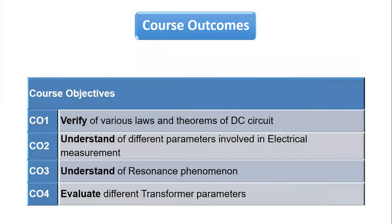So to start with, the outcomes of this particular lab are — there are four outcomes as listed here. The first outcome is that after going through this lab, you will be able to practically verify all the laws like KVL and KCL, and all the theorems that you would study in your theory — for example, superposition theorem, maximum power transfer theorem, Thevenin's theorem, and Norton's theorem.